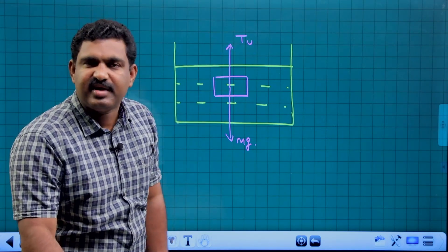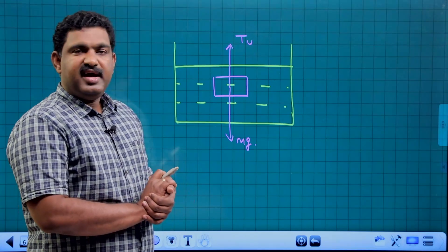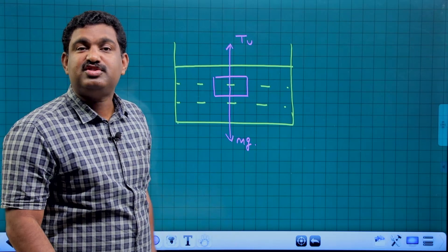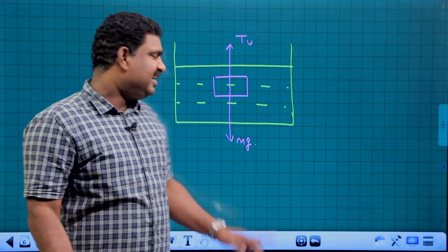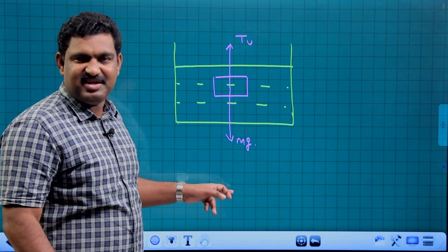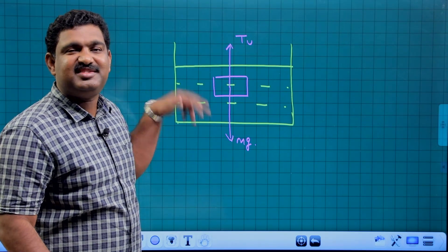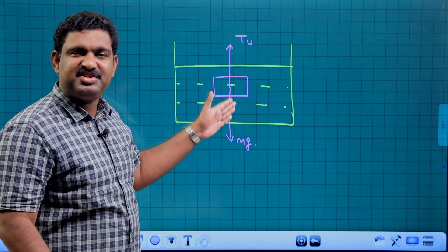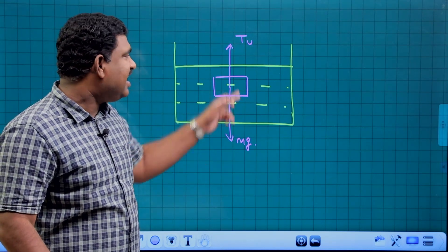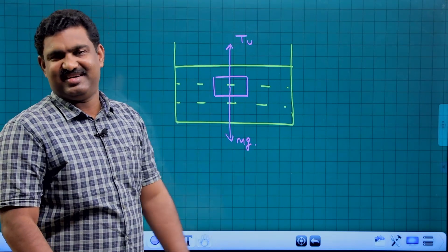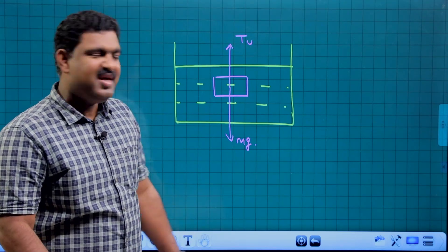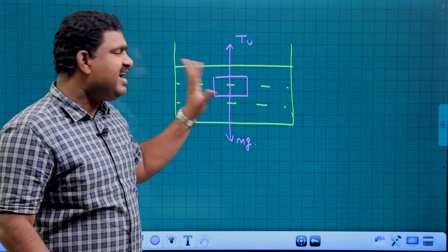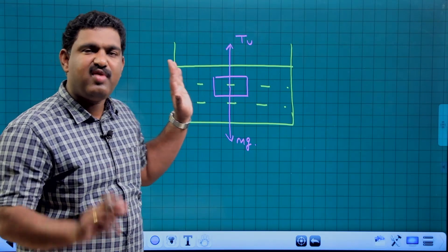That upward force is called the buoyant force or the upthrust. Because the true weight is Mg, and T is the tension in the string, the measured weight of this body is Mg minus upthrust.